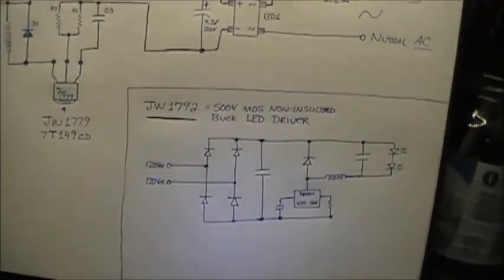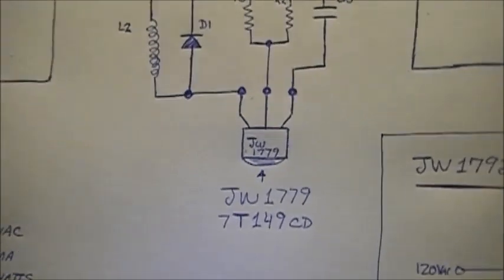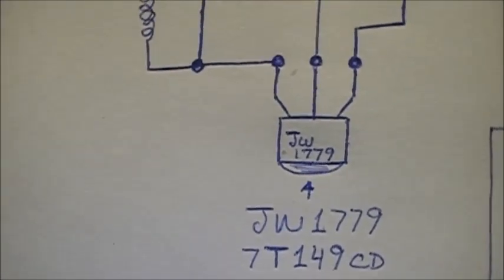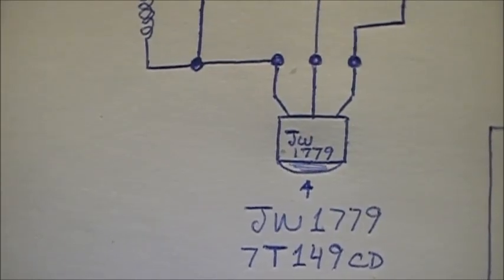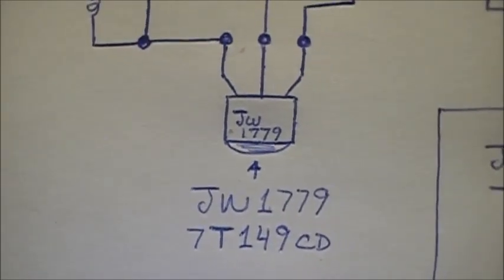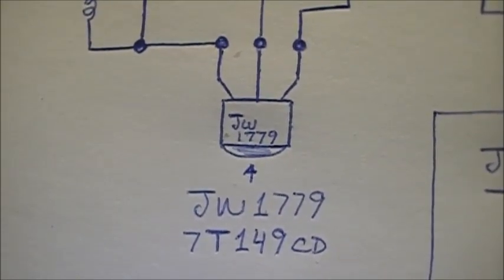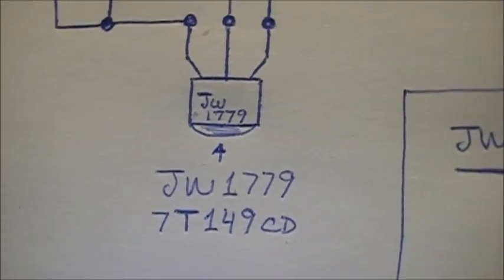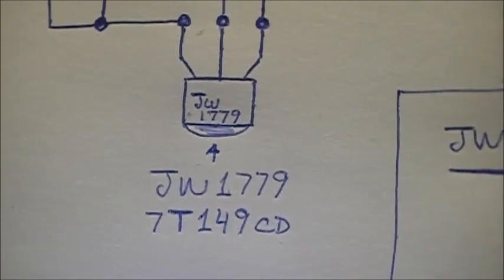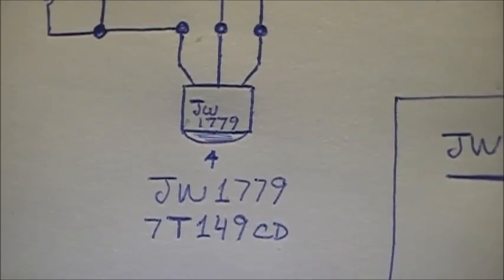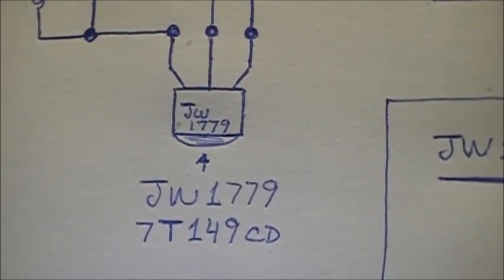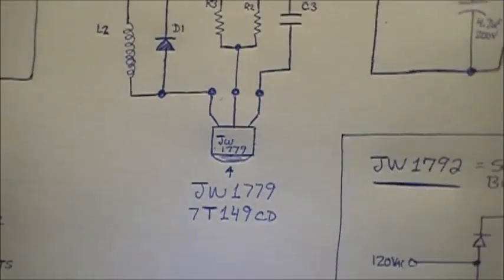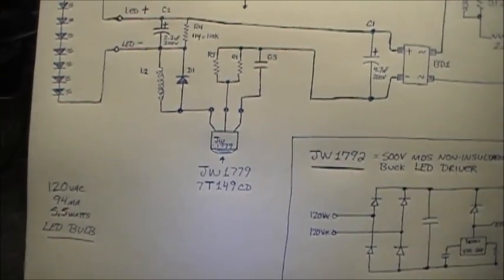But apparently the features, which I'm assuming the JW1779 should also be pretty much the same thing: Excellent line load regulation, boundary mode operation, high efficiency, LED SCP, VDD UVLO, over temperature protection, inductor short protection, integrate 500 volt low MOSFET. So yeah, it's actually a MOSFET. Interesting.